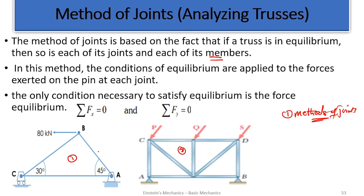So if we establish that, what do we do? In this method, the conditions of equilibrium are applied to the forces exerted on the pin at each joint. The method is the method of joints, so we deal with the joints and apply the equilibrium conditions at the joints. The only condition necessary is force equilibrium: summation of forces horizontally (X) is zero, and the same for Y — it's also zero.